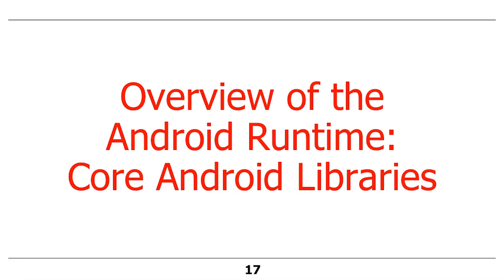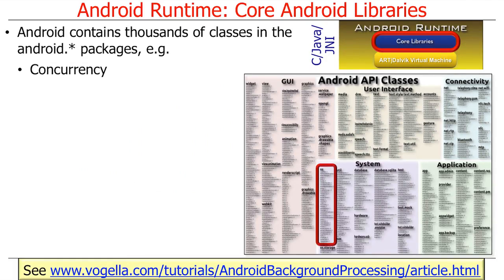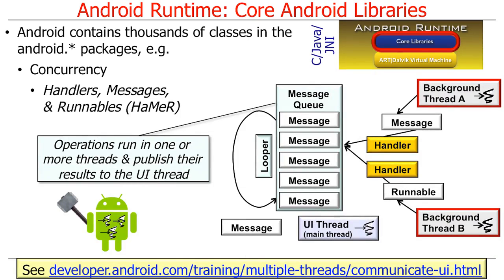Let's now talk about some of the central core Android libraries that are part of the Android runtime layer. Android contains thousands of classes in the Android packages. One of the key sets of packages and classes relate to concurrency, which occur in the os package in the system portion of Android. There are two key mechanisms and frameworks provided in the concurrency packages. One is called the HaMeR framework, where HaMeR stands for Handlers, Messages, and Runnables. This framework allows operations to run in one or more threads and publish the results to the user interface thread.